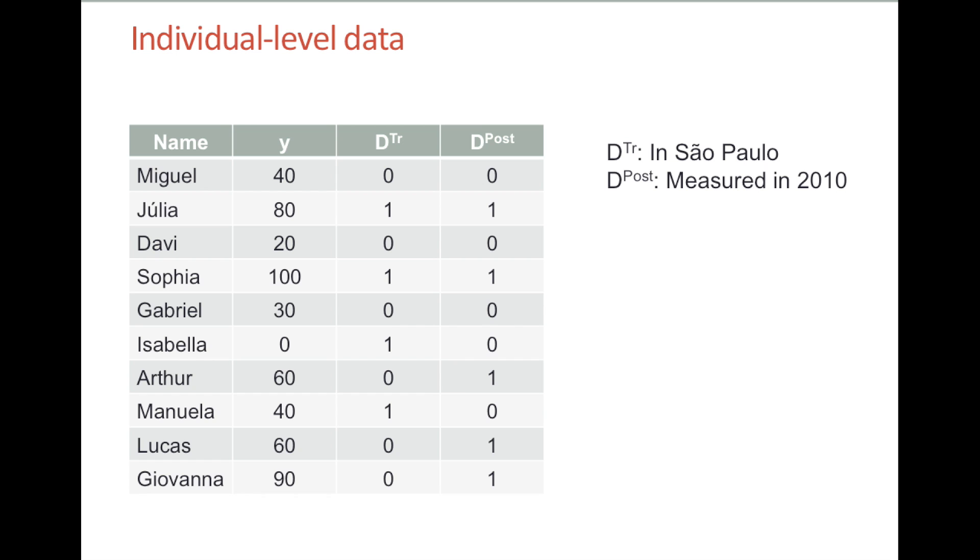Here we have pooled data on kids before and after the intervention in both Sao Paulo and Rio. Y is the variable holding the test score. DTR is a dummy variable equal to 1 if the individual who took the test was in the treatment group, and DPOST is equal to 1 if the individual took the test after the intervention. So for example, Miguel got a 40 on the test, and he took the test in Rio, the control group, and he took it before program implementation in Sao Paulo.